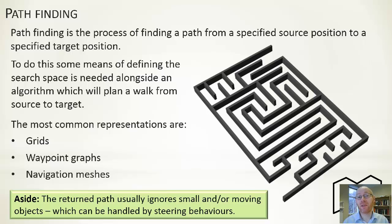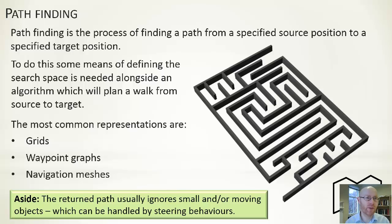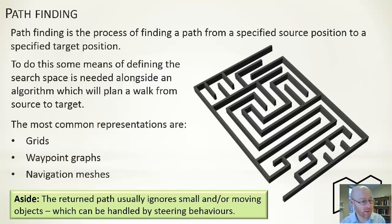To do this, we assume we are moving within a particular world, and that world has some representation — a walkable surface that we can travel along. There are three common ways this can be done in games: grids, waypoint graphs, and a navigational mesh. A navigational mesh is more 3D-related, but we'll look at the other two. Most algorithms here will use a grid-based representation, although they work across all of these different implemented forms.